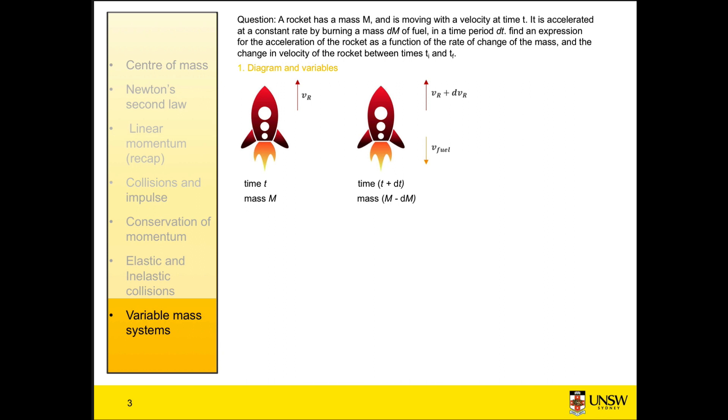We have our diagram and variables, and we know what we're looking for. The next question is what equations do we use? We're given mass, velocity, and initial and final states of a system. To me, that's a clue that I'll be looking for conservation of momentum.